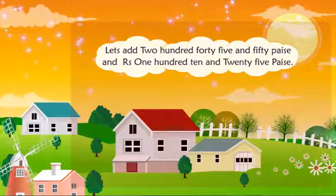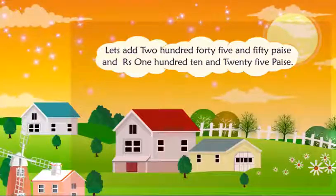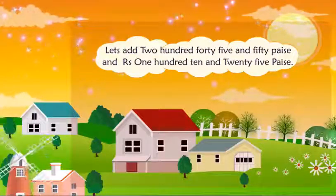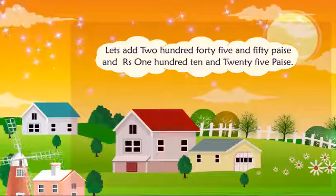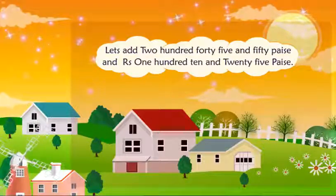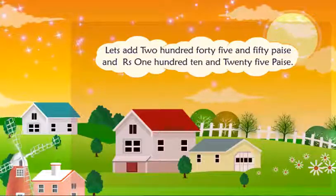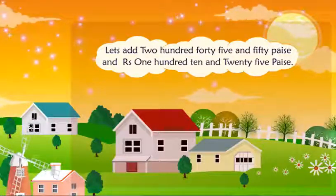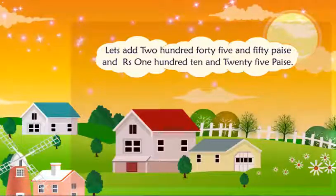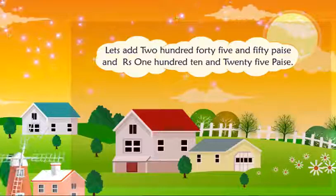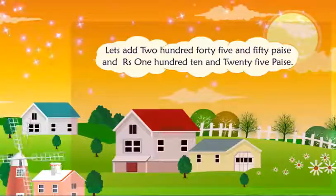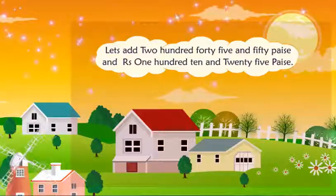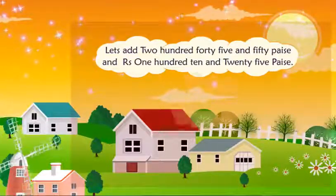Let's add rupees 245 and 50 paise, plus 110 and 25 paise. Write the two numbers one below the other, aligning the dots, and add.